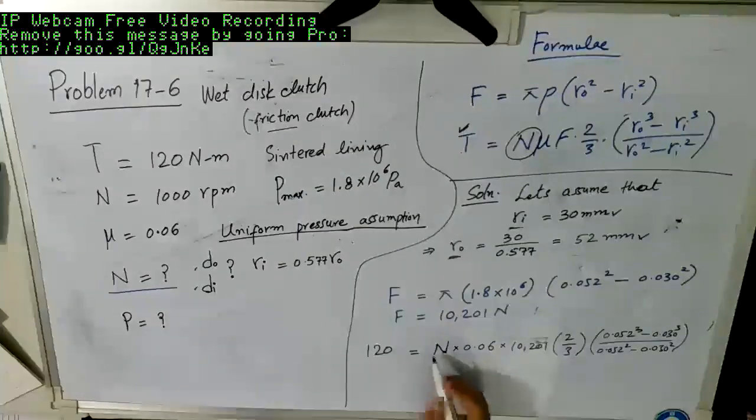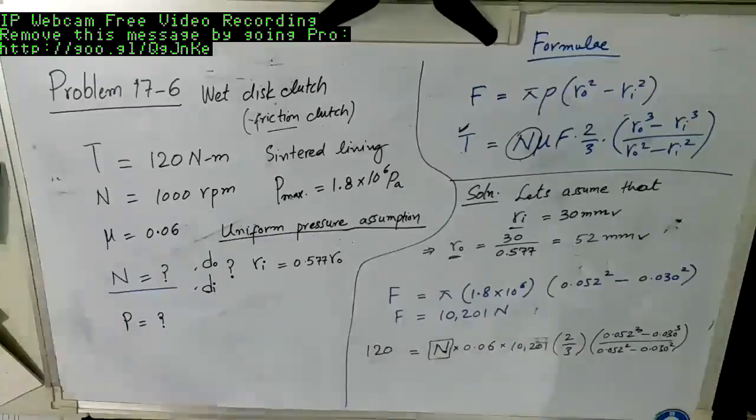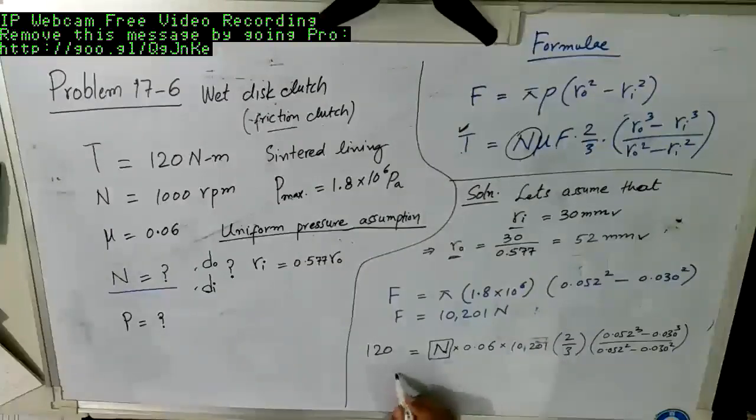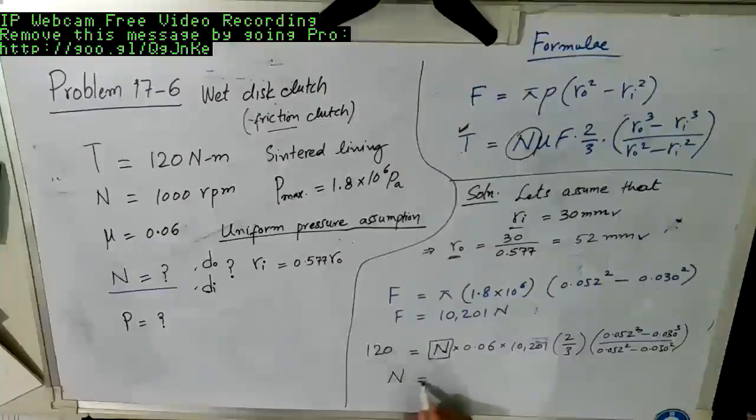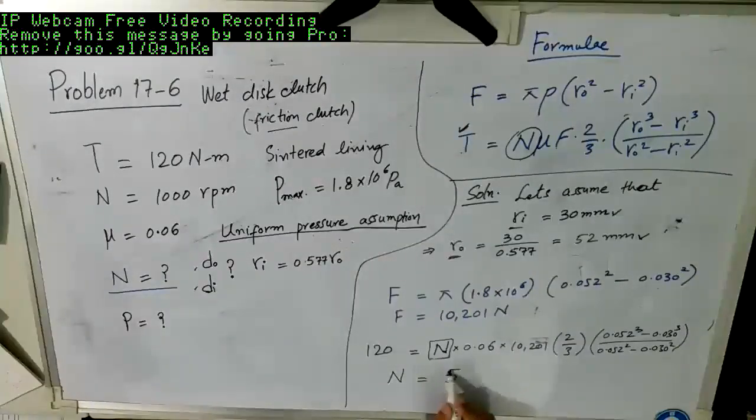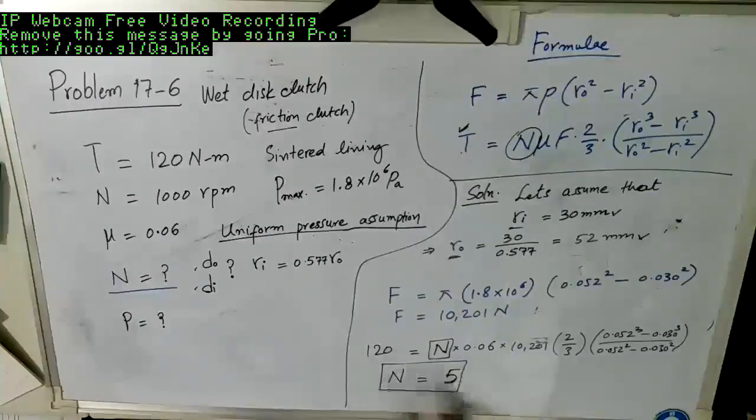So from here we can actually find out the value of N. And this value of N, when we solve this, it comes out to be 5. So this is our final answer.